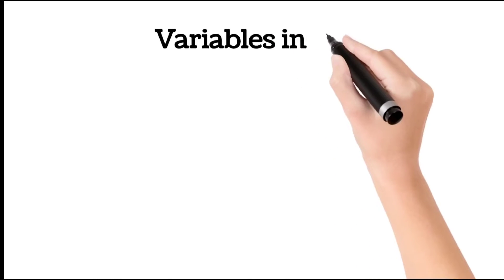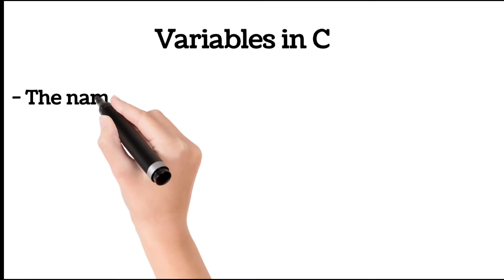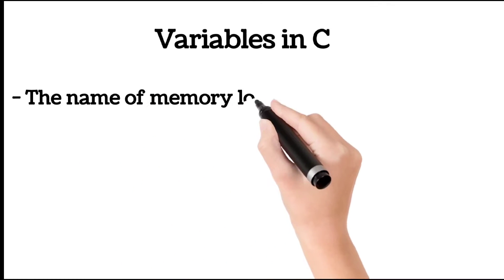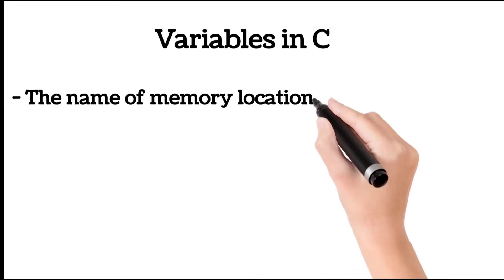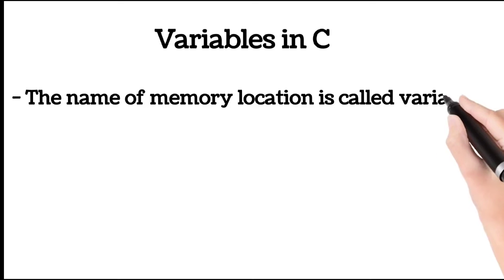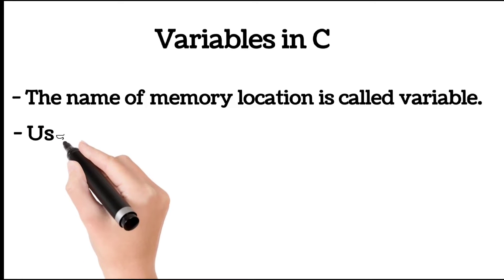Variables in C. The name of memory location is called a variable. Memory location per data store karne se pahle in location ko name diya jathe hai, jenhe hum variable kahte hai. Programming me, variables memory location names hoote hai, jenki madad se memory me data rakha ya nikala jathe hai.